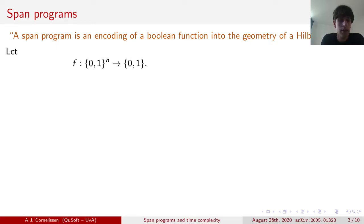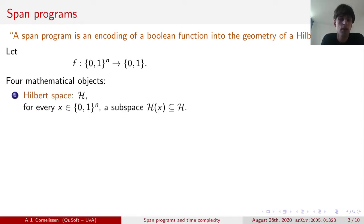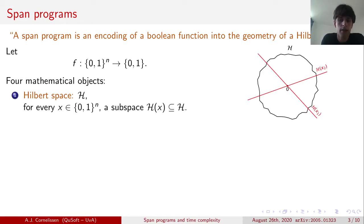To that end, let f be a boolean function that takes n bits as input. If we want to encode this boolean function into the geometry of a Hilbert space, then we need to define four mathematical objects. First, we define the Hilbert space itself, which we call H. And to every element x in the domain of f, we associate a subspace of H, which we call H_x. On the right, we show a visualization of this, where the big blob represents the Hilbert space H, and the red lines represent the subspaces associated to the different elements in the domain of f.